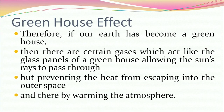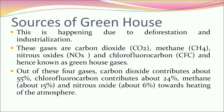If our earth has become a greenhouse, then certain gases act like the glass panels — allowing the sun's rays to pass through but preventing heat from escaping into outer space, thereby warming the atmosphere. These gases arise due to deforestation and industrialization. They are carbon dioxide, methane, nitrous oxides, and chlorofluorocarbons — known as greenhouse gases. CO2 contributes about 55%, CFCs about 25%, methane about 15%, and nitrous oxide about 6% towards heating of the atmosphere.